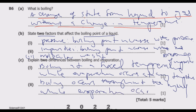Number two: boiling occurs throughout the liquid while evaporation occurs only at the surface of the liquid. Evaporation just takes place at the surface on top of the liquid, while boiling occurs throughout the entire liquid.